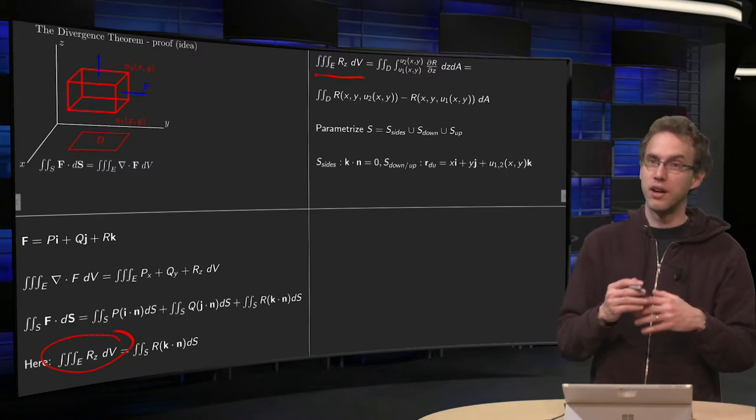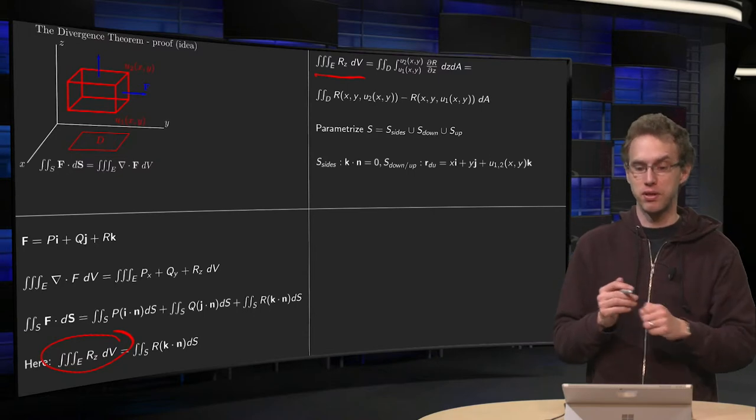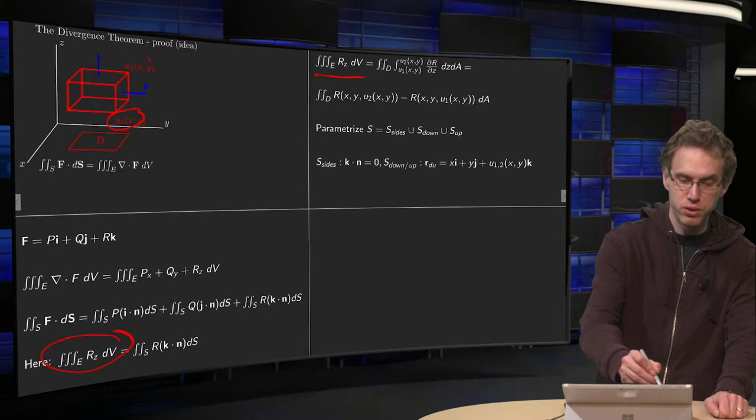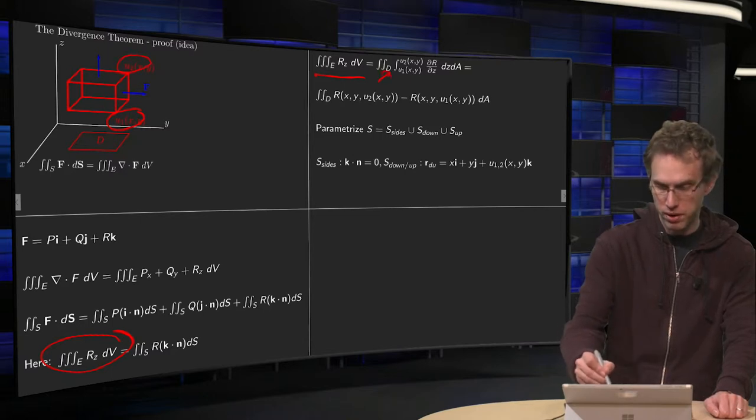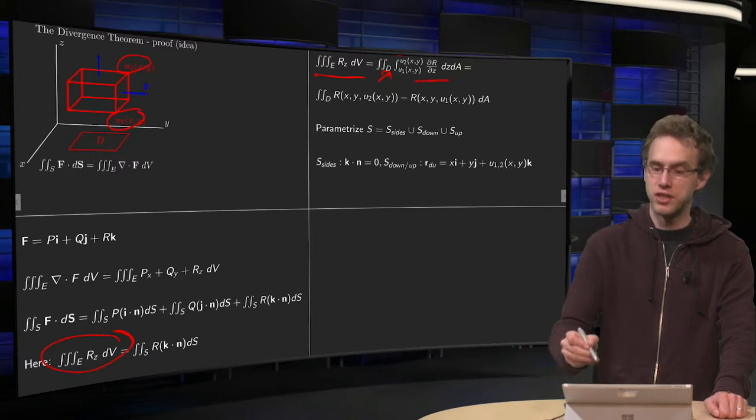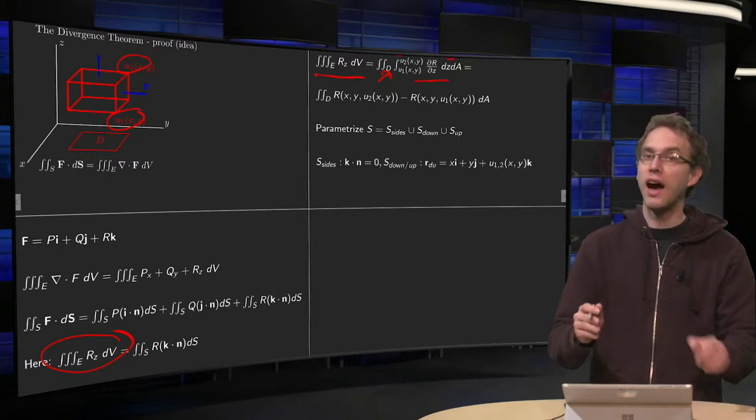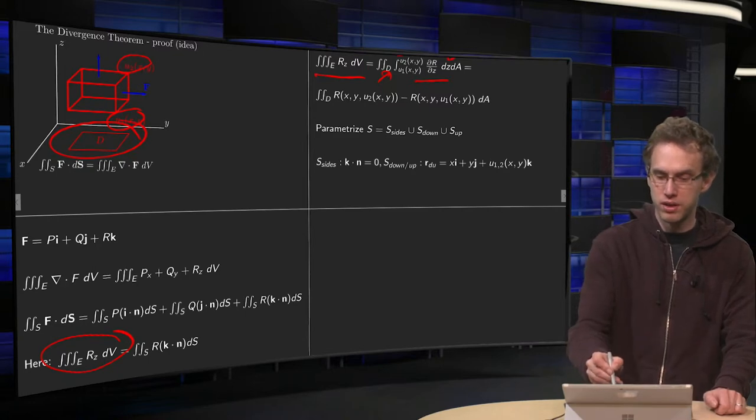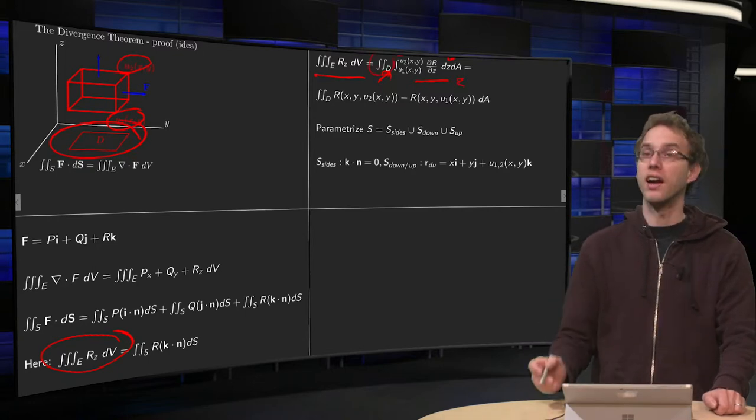If we perform the integration with respect to Z first, then Z goes from u1 to u2, over here, of the Rz with respect to Z. And then the other integrals will be an integral along D, this one, with respect to the area element.